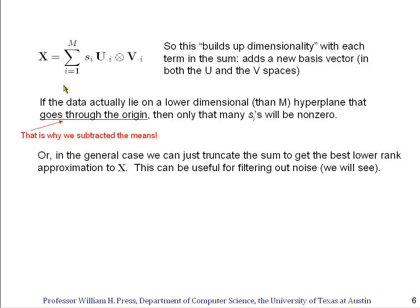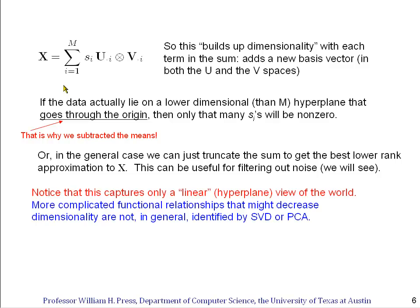Or in the general case, we could just truncate this sum after a number of terms of our choosing and see what the best lower rank approximation to X looks like. This can be useful for filtering out noise. We'll see this in just a couple of minutes because it could be that most of the signal is in the lower dimension pieces and that the high dimension pieces are just a kind of a wash with noise that we can thereby filter out. And again, notice that this captures only a linear hyperplane view of the world. If there are more complicated functional relationships among the data that decrease its dimensionality, but are not approximated by a plane through the origin, then these in general will not be identified or exploited by SVD or principal component analysis or any of the stuff we're talking about here.